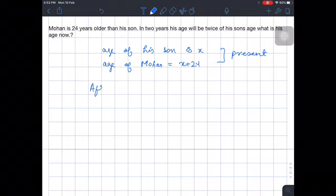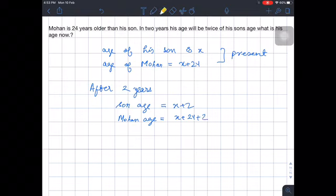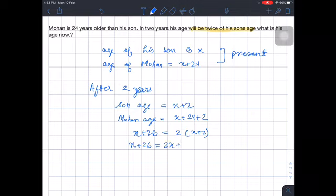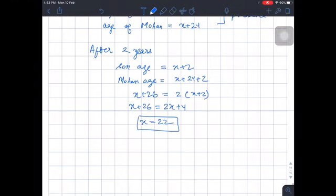So after two years son age is equal to x plus 2 and Mohan age is x plus 24 plus 2. So now after two years Mohan age will be twice of his son's age, so means Mohan age x plus 26 is equal to 2 times x plus 2. So now x plus 26 is equal to 2x plus 4, means x is equal to 22.